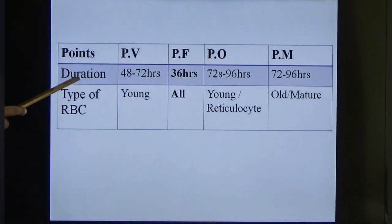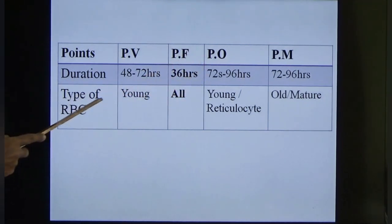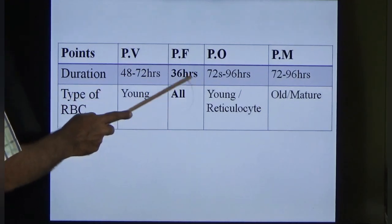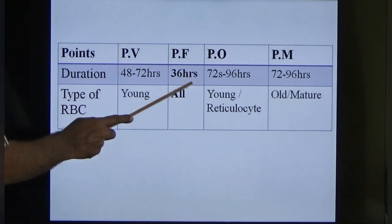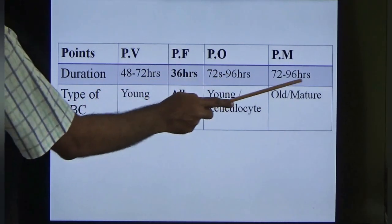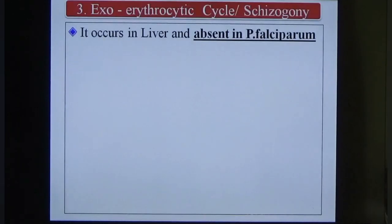Things to remember about the erythrocytic cycle: in falciparum, the duration of the erythrocytic cycle is only 36 hours. Also, falciparum affects all types of RBCs, as we studied earlier.